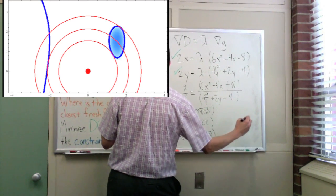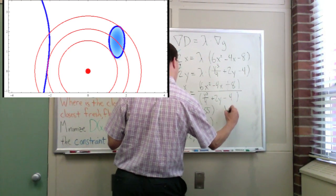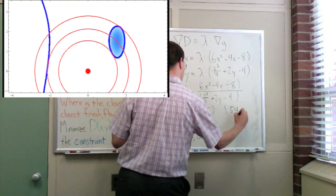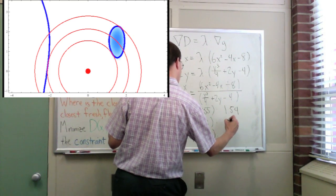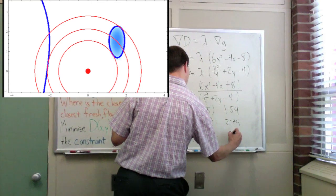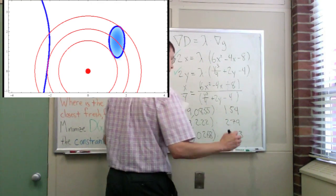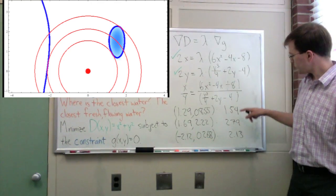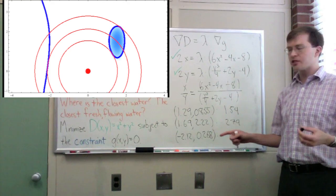And the distances for each one, the first one has a distance from Ann's house of 1.54, in whatever the heck units these are. Here's 2.79, and here's 2.13. And so those are our three distances, those are our three points.